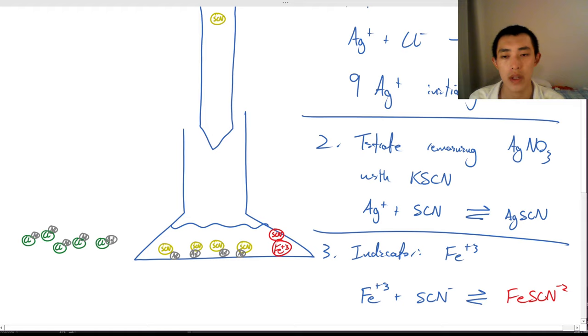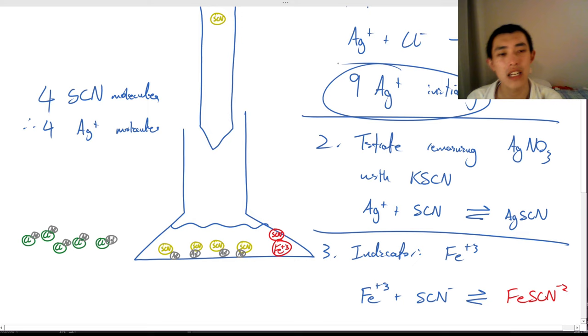So now what we can do is we can say, okay, I used 5 SCN molecules, and we'll subtract one because one was just for the indicator. So we used 4 SCN molecules. So if I used 4 SCN molecules, how many silver molecules must there have been? Therefore, there must have been 4 silver molecules. So if there were 4 silver molecules, and I had 9 initially, I used to have 9 and I only have 4 now, how many of my silver molecules were used up in the first step? Well, it must have been 5.